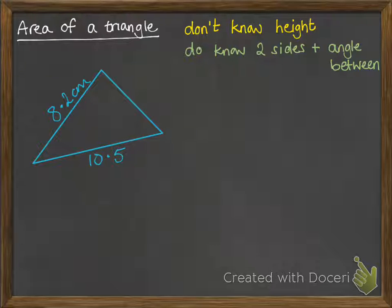So it'll look something like this. You've got your triangle with two sides and the angle marked in between them. The formula that you use is this one.